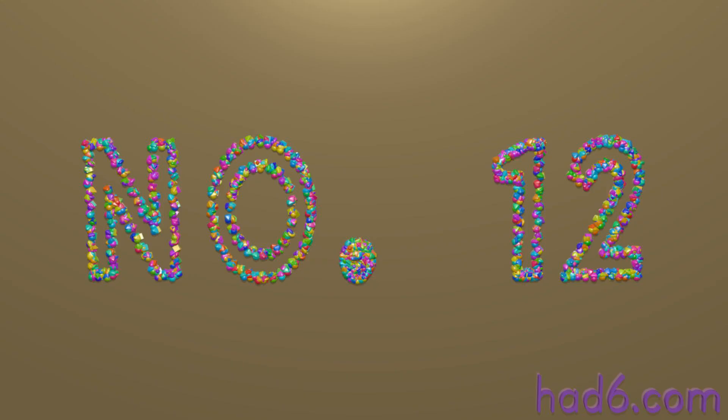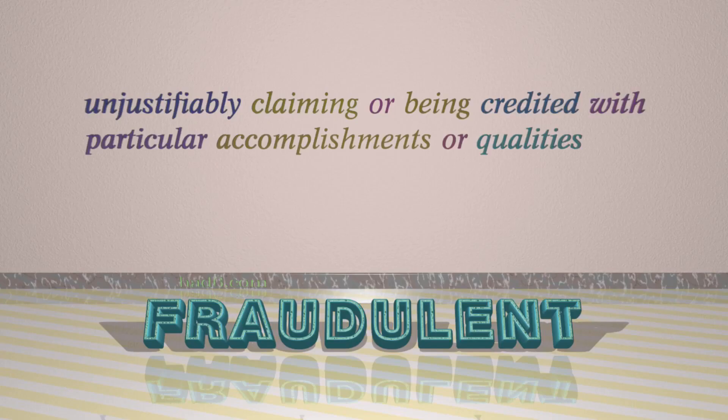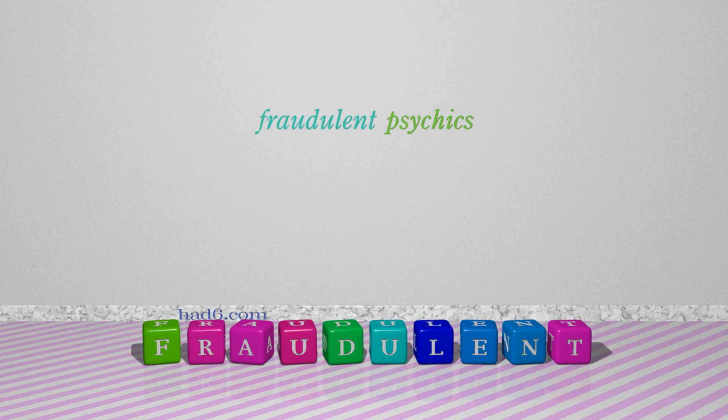Number 12: Fraudulent — which means unjustifiably claiming or being credited with particular accomplishments or qualities. For example: Fraudulent psychics.